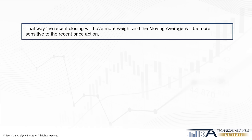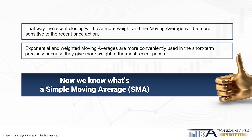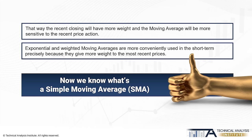I am giving you an example to calculate a 10-period moving average, but the same thing applies to any period. The truth of the matter is that exponential and weighted moving averages are more conveniently used in the short term, precisely because they give more weight to the most recent prices. We already know what a simple moving average is — traders refer to it as SMA. But in this course, we are more interested in how to use them in your trading and analysis, since the calculations are made automatically by all trading software. The calculations are only useful for you to understand the differences between an exponential, weighted, or simple moving average.